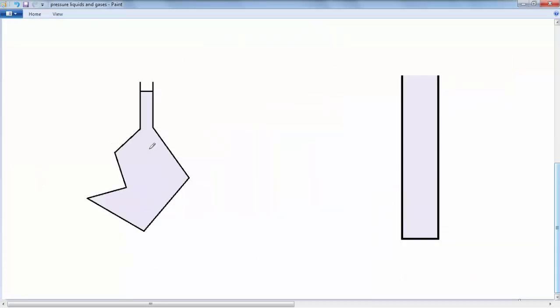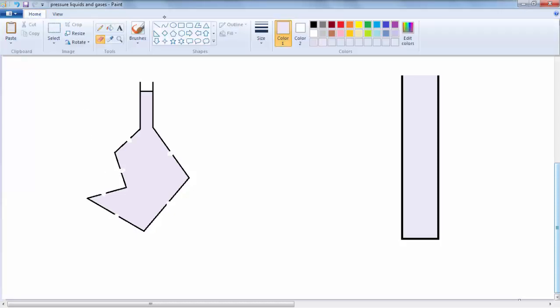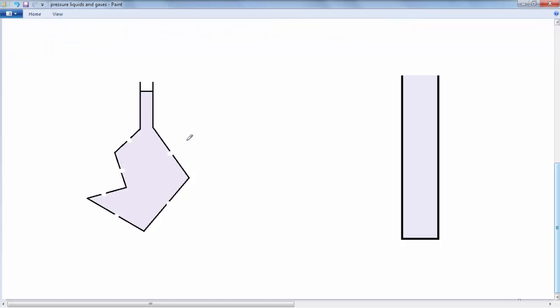Now, you can observe this property of fluids in the practical demos section of the website. For example, if you have some complex shape of a container like this, and it's filled with a fluid such as water, well, if you puncture the sides of the container, the fluid will always project from the container at right angles to that surface.